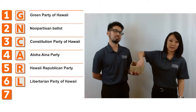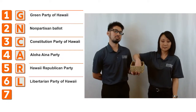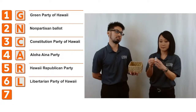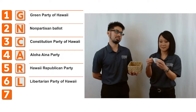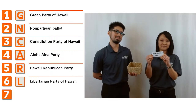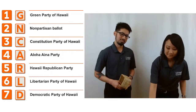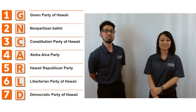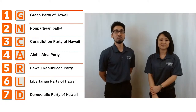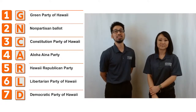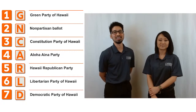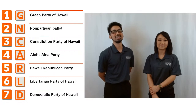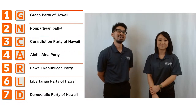And position number seven is Democratic Party. So this is the order the political parties and non-partisan will appear on the 2022 primary election ballot. These results will be posted on our website elections.hawaii.gov. Thank you.